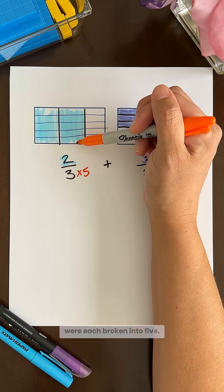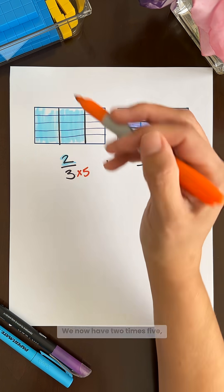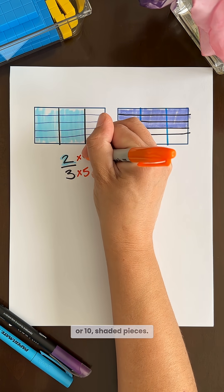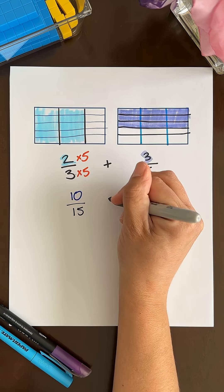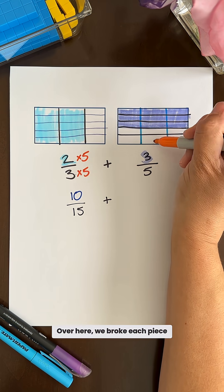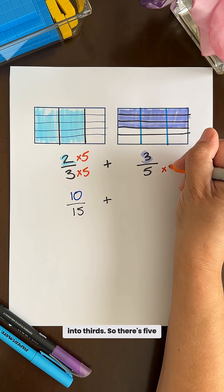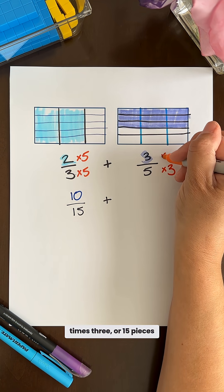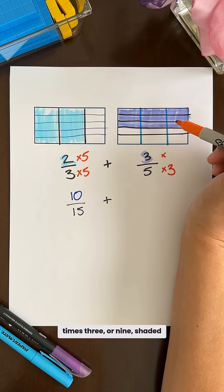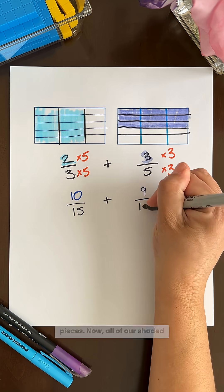Our two shaded regions were each broken into five. We now have 2 times 5 or 10 shaded pieces. Over here we broke each piece into thirds so there's 5 times 3 or 15 pieces in total and 3 times 3 or 9 shaded pieces.